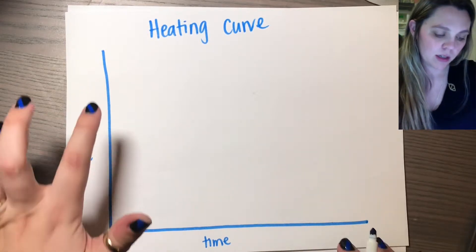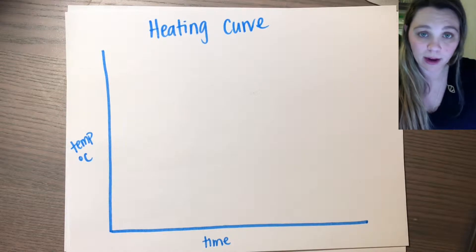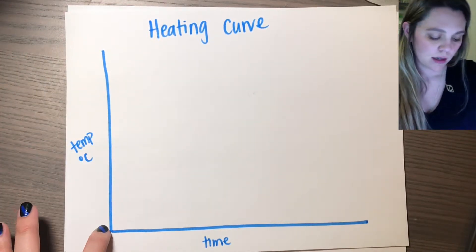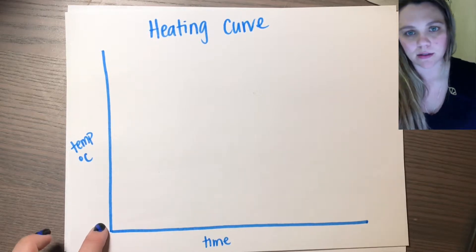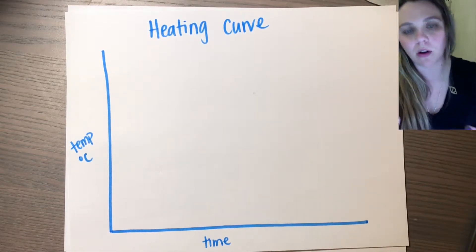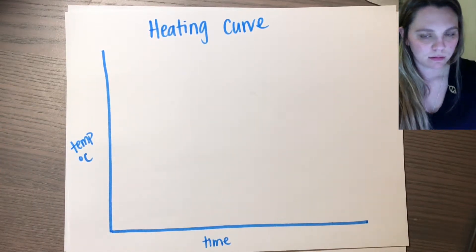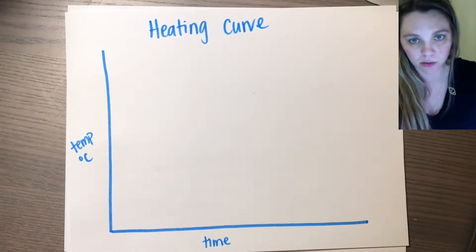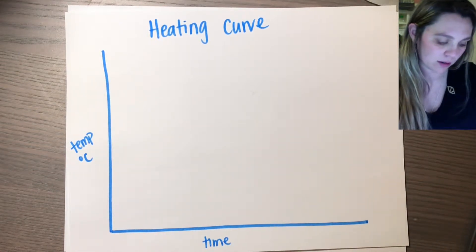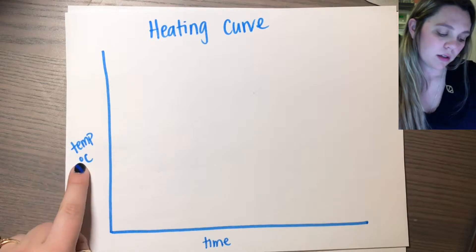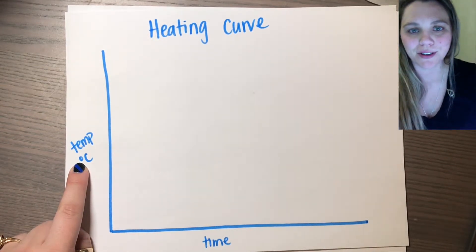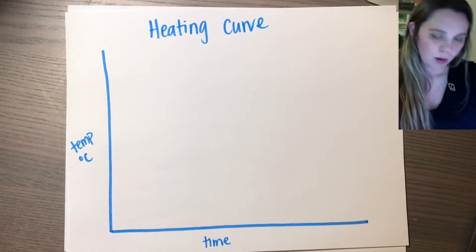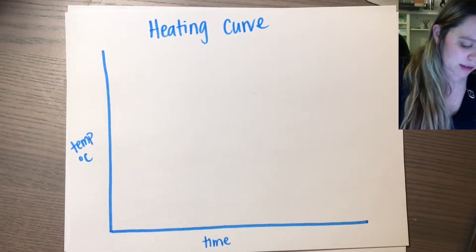A heating curve is just a graph that shows temperature on your y-axis and time on your x-axis, and all it's showing us is stuff heating up. This is not super complex, so don't be scared. Just always remember temperature for your heating curve is in Celsius — Fahrenheit is garbage in chemistry — so everything's in Celsius.